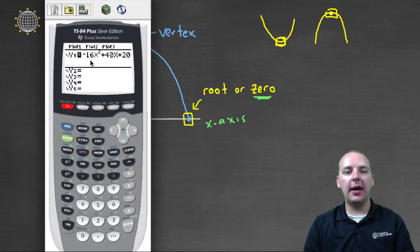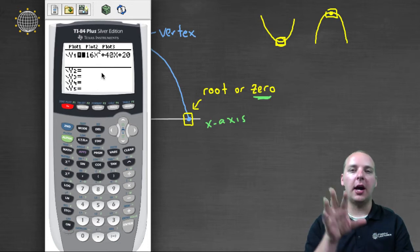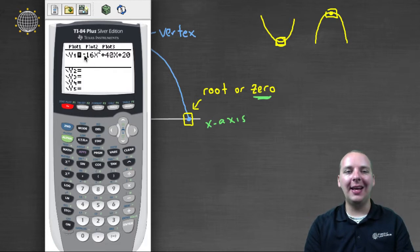So here I've got a projectile example, as if we threw, or kicked, or shot something in the air, and the path that the object takes is modeled by negative sixteen t squared plus forty t plus twenty. But the graphing calculators don't use the letter t, so you can use the letter x, it's no big deal. So negative sixteen x squared plus forty x plus twenty.